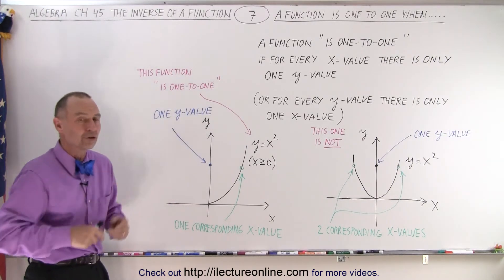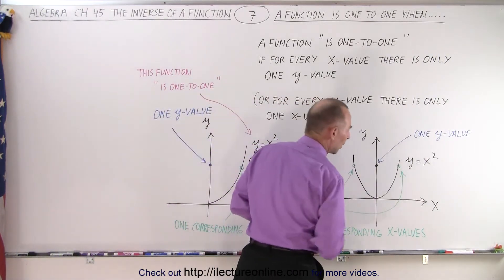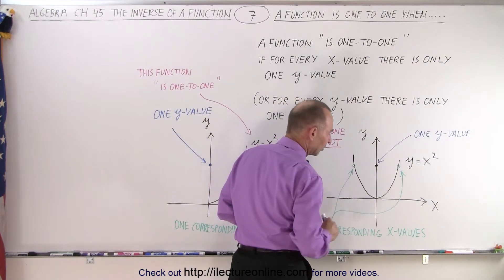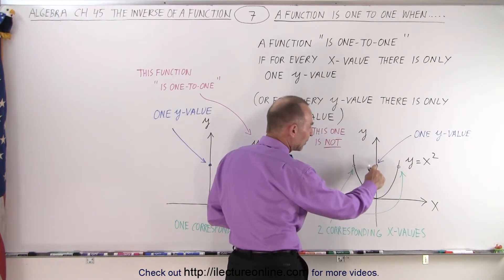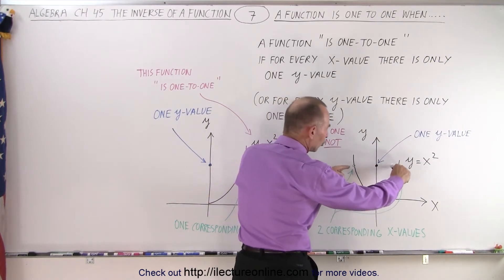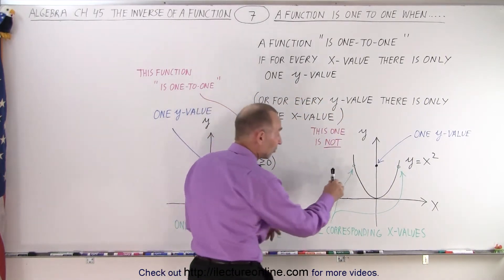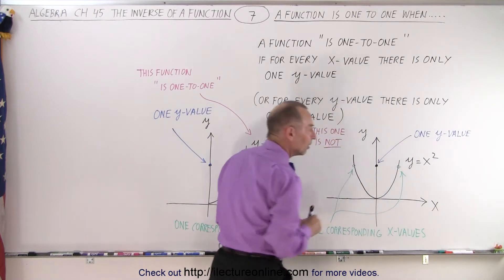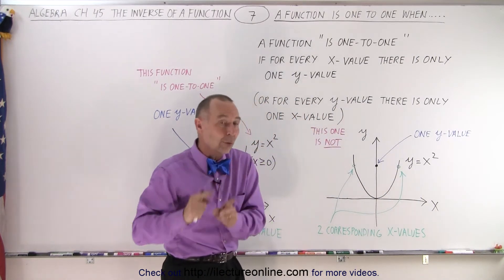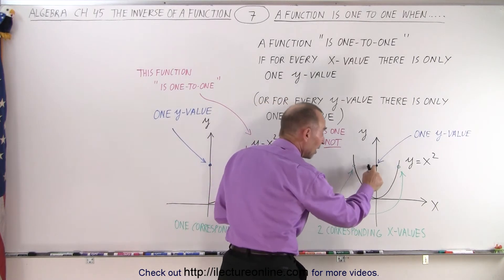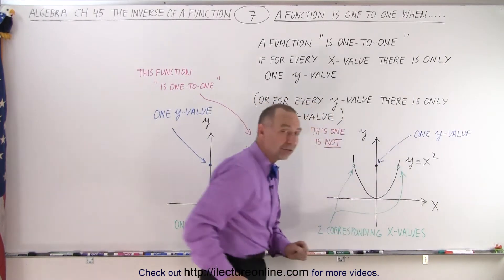So here are two functions. Here the function is y equals x squared. Notice it's the equation of a parabola that has the vertex at the origin. And for a particular value for y, notice that there's two values for x, but it's still a function, because it passes the vertical line test. Now, this is not a function that is one-to-one. This is not one of those, because for this one y value, there's two possible x values on the function.